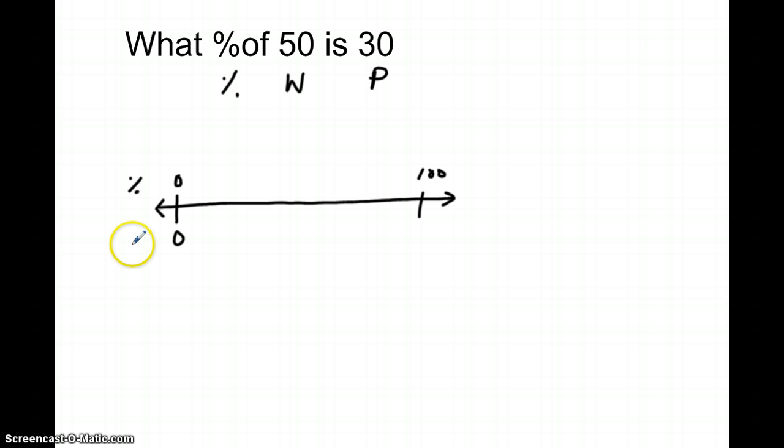We're going to label. It's really important. The percent's on the top. And again, since I'm talking about money, whatever the label is, is going to go on the bottom number. I know 50 is the whole amount, so 50 has to go with 100%. My target is to get to 30.